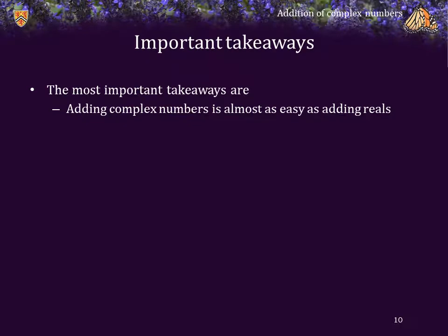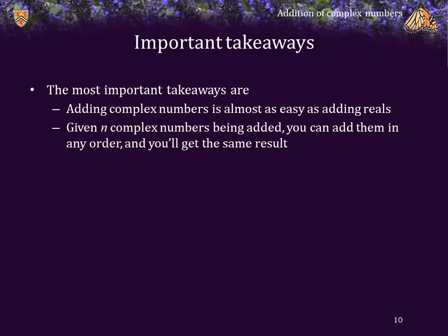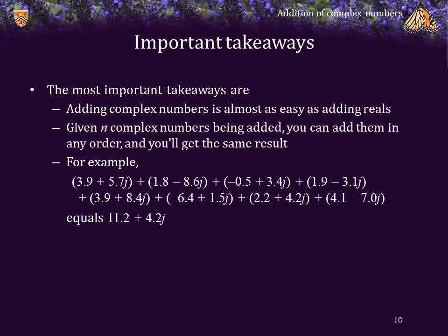The most important takeaways are that adding complex numbers is almost as easy as adding real numbers. Also, given n complex numbers being added, you can add them in any order, and you will always get exactly the same result. For example, given these 8 complex numbers, no matter how you add them up, it will always equal 11.2 plus 4.2j.